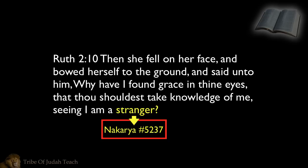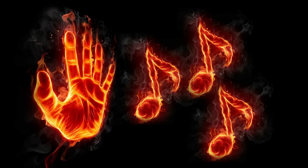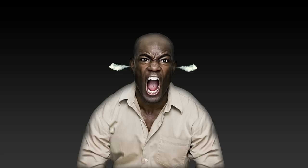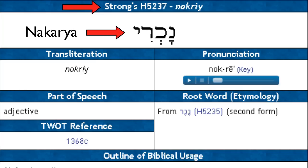We proved that already with the Hebrew word Zawar. The Most High and the people in the Bible use the same words in multiple ways, just like we do with English words. For example, if I say the stove is hot, that means the stove can actually burn me if I touch it. But if I say that song is hot, that doesn't mean the song can actually burn me — it means the song is really good. I could also say that brother was upset, he was hot, meaning he was really angry. I used the same word hot three times but it had three different meanings. Well, the same rules apply in the Hebrew. The word Necariah has multiple meanings — it can be used to describe a person without having anything to do with their actual nationality.